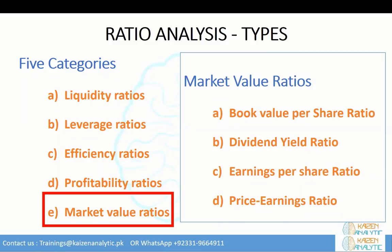Market value ratios are used to evaluate primarily the share price of a company's stock. Common market value ratios include book value per share, which calculates the per-share value based on equity available to stakeholders; dividend yield ratio, the amount of dividend attributed to shareholders relative to market value per share; earnings per share ratio, which measures the amount of net income earned for each share outstanding; and price-to-earnings ratio, which compares a company's share price to its earnings per share. I've given a bird's-eye view of ratio analysis without going into depth — our focus is to work on data and conduct ratio analysis in Power BI.